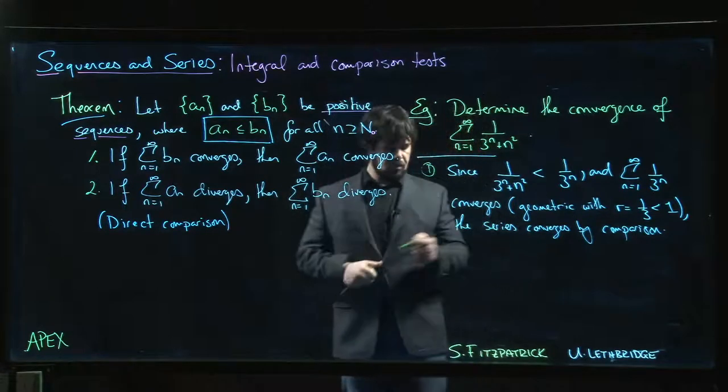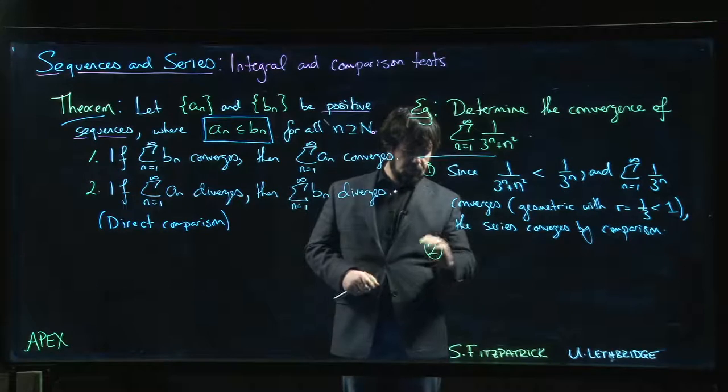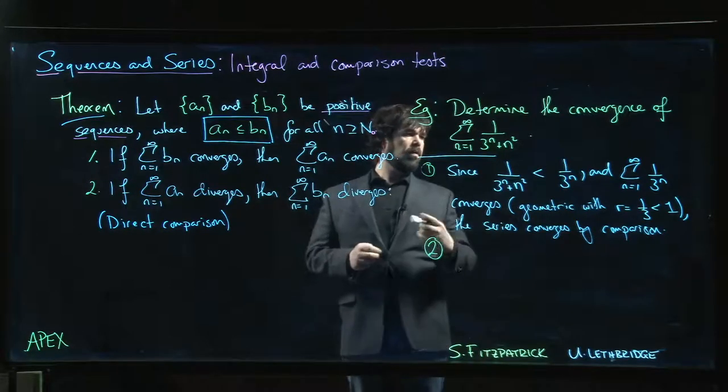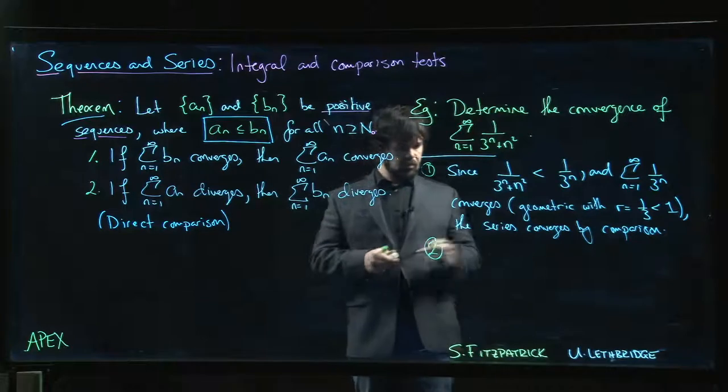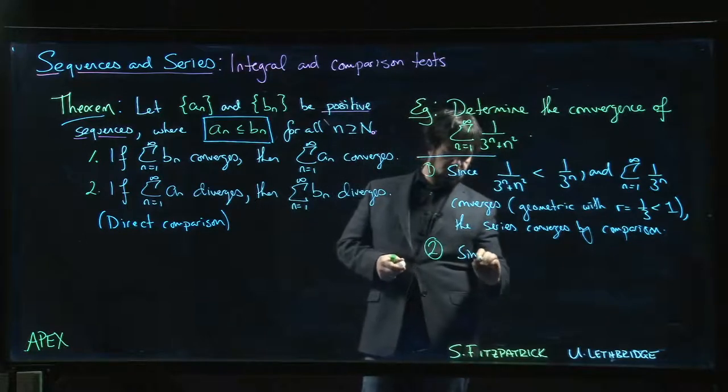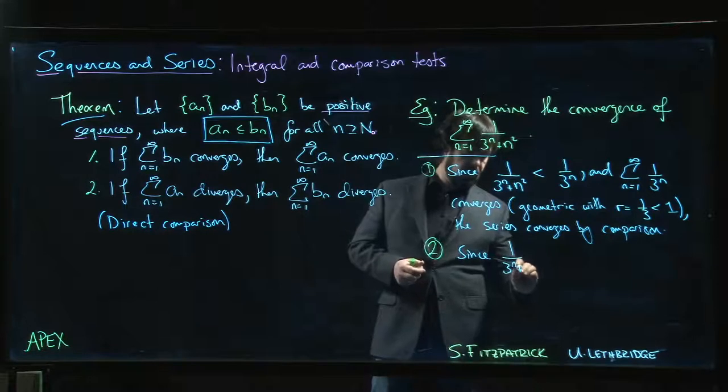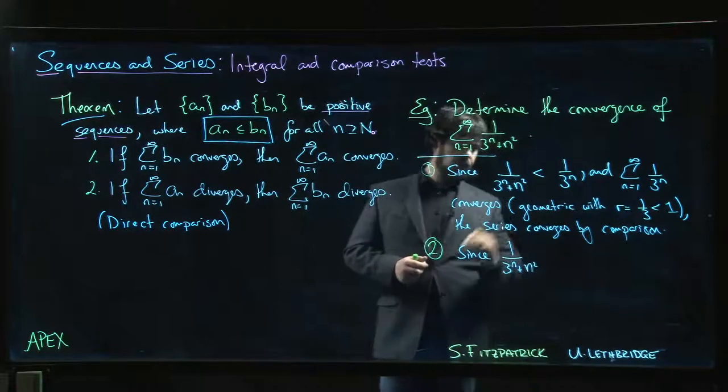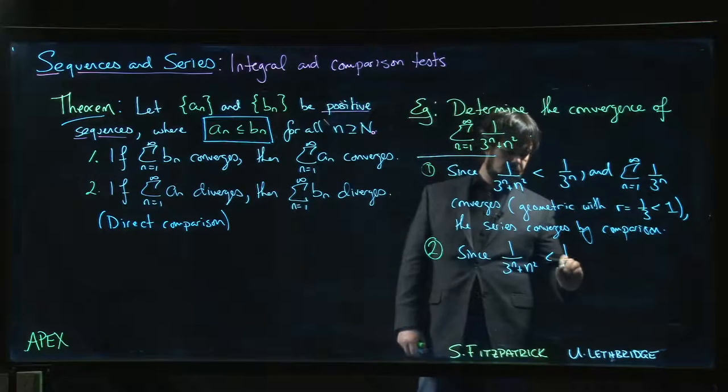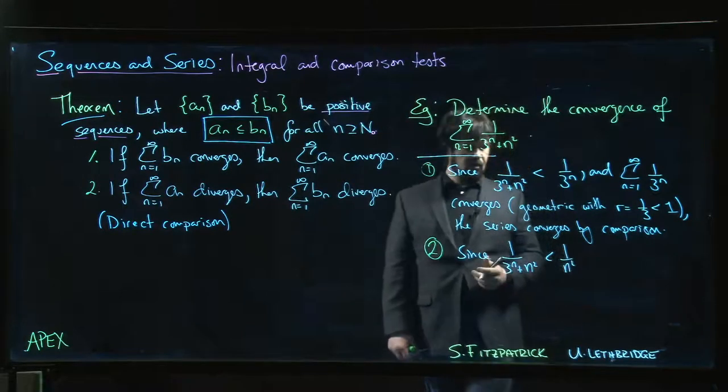Now, of course, you could have gone in another direction with this. You could have also said, I don't need to compare to the geometric series. I could also compare. This one gave us two options. We could have also said, 3 to the n over n squared, for the same reasoning, is less than 1 over n squared.